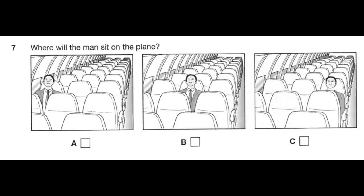Question 7. Where will the man sit on the plane? On the plane at last. Now, our seats are in row 12, over there. Yes, A and B. Seat A is next to the window. Do you want that one, or do you prefer to sit in the middle? Well, they said the seat on the end seems to be empty too, so I'll take that one instead. I'm not that keen to see outside. Well, I love looking at the clouds, so I'll sit near the window. We'll put our newspapers in the middle. OK?